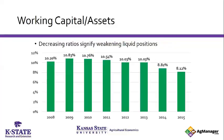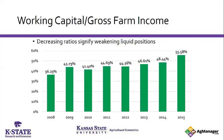To compare across operations, you usually divide working capital by gross revenue or assets to make it scale-neutral. Looking at working capital divided by assets, we actually peaked in 2009 and have been carrying less working capital over time — moving from about 10.8% down to about 8%. When divided by gross farm income, it can be misleading because gross farm income has fallen faster than working capital, making you look stronger than you actually are. You have to be a little careful with these ratios.